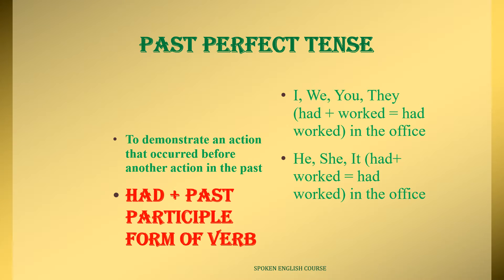The third type is past perfect tense. Past perfect tense refers to an action that was completed before another past action. The format of present perfect tense is has or have plus past participle form of verb. Similarly, past perfect tense format is had plus past participle form of verb.